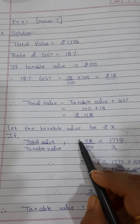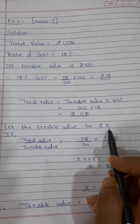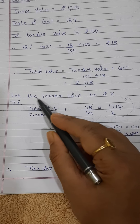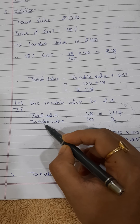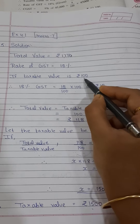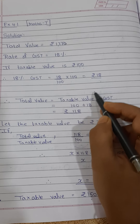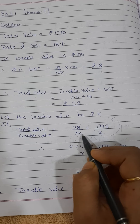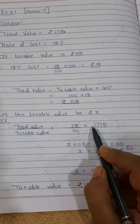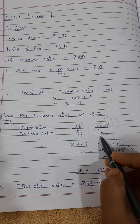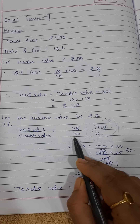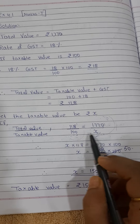As per this sum, the total value is ₹1770, so we assume the taxable value as rupees x. We are solving by comparison method, comparing the ratio of total value to taxable value. Case 1: when taxable value is 100, total value is 118. Case 2: when total value is 1770, taxable value is x. This method where we keep two ratios in front of each other is known as comparison method.